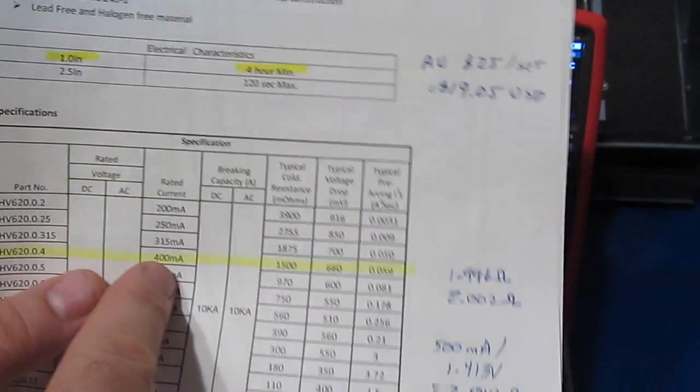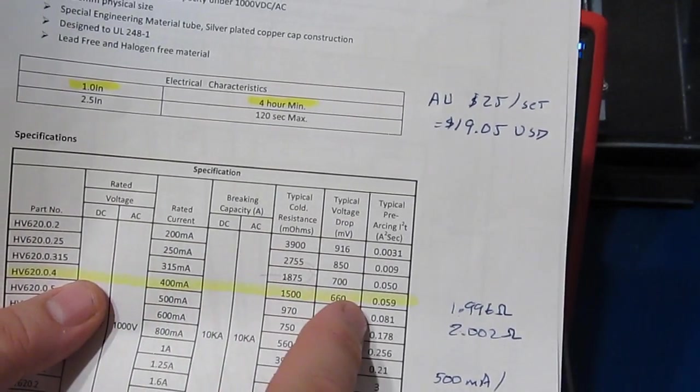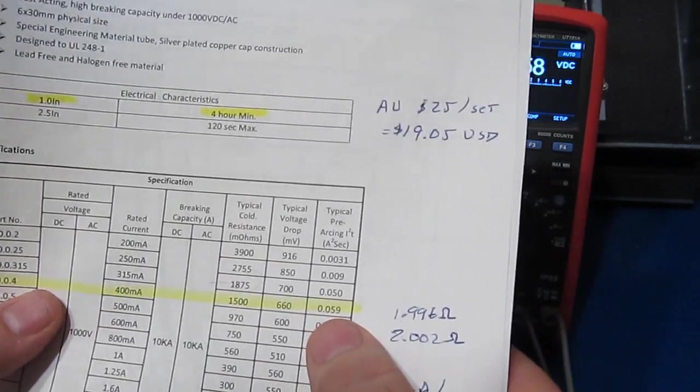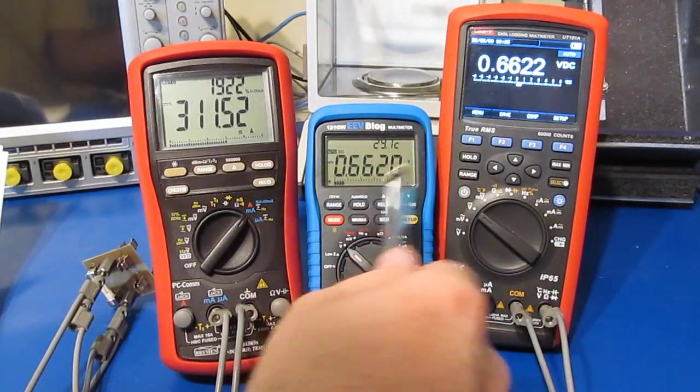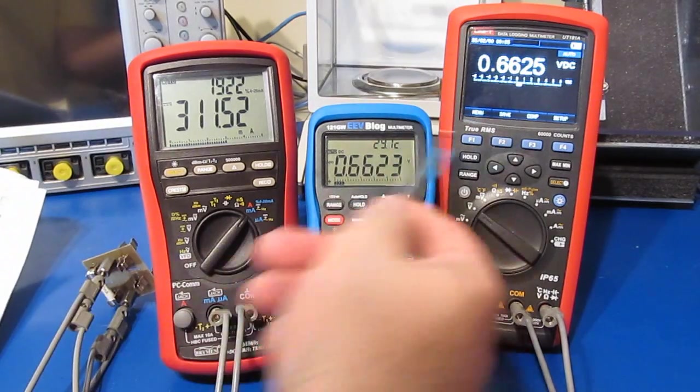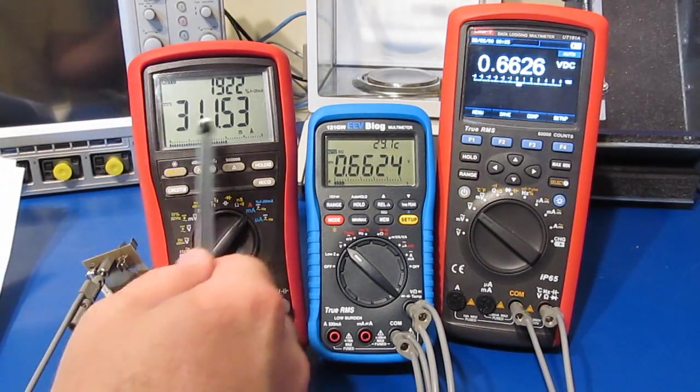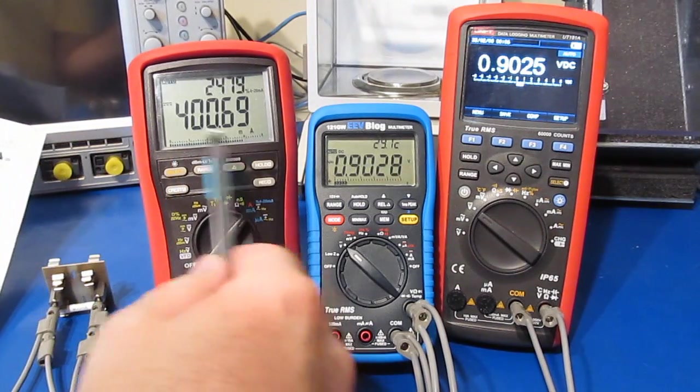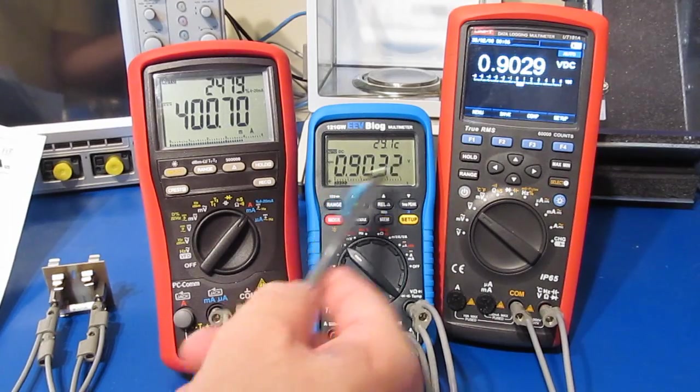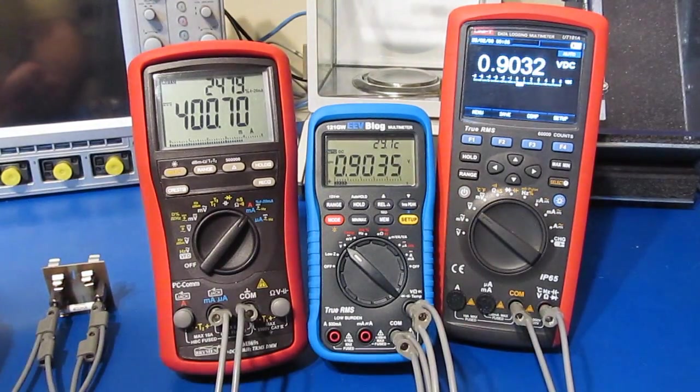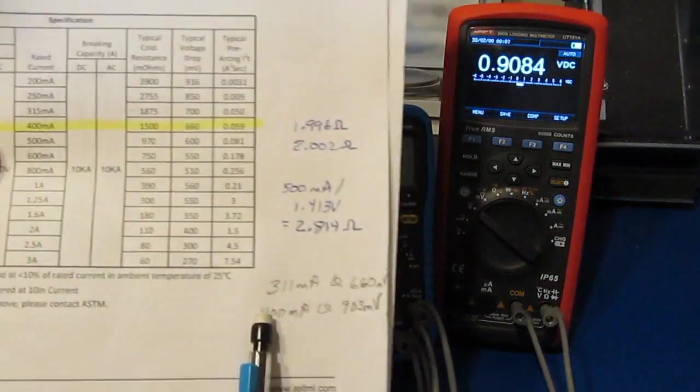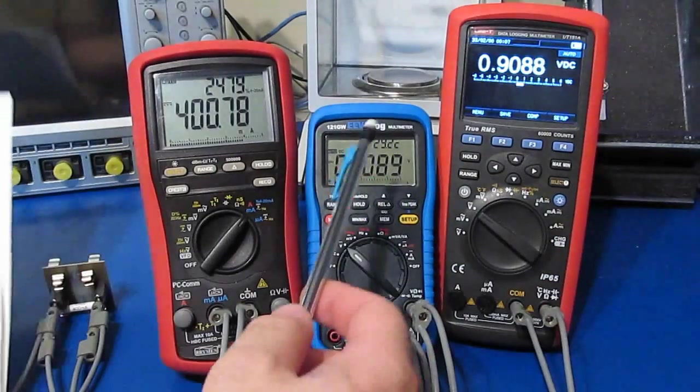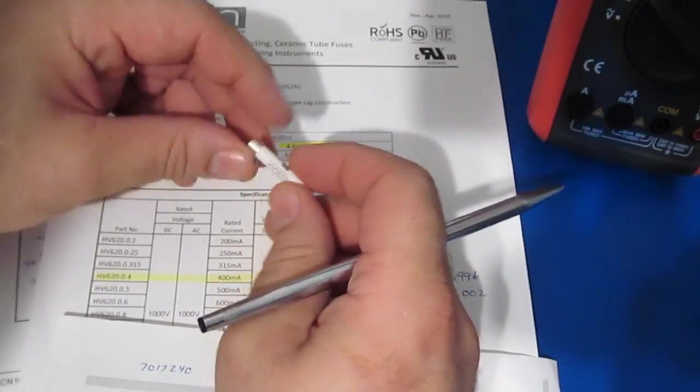So again at 400 milliamps the fuse is rated to drop about 660 millivolts, so let's see how close that is. So you can see we're currently reading roughly 662 millivolts and it's at roughly 311 milliamps. So this is at roughly 400 milliamps and you can see the fuse is now dropping 903 millivolts, so again that's fairly far outside what the datasheet calls for at 660 millivolts.